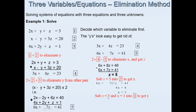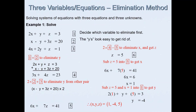Now substitute z = 5 and x = 1 into equation 1: 2(1) + y + 5 = 3. This gives 7 + y = 3, so y = −4. The final answer is x = 1, y = −4, and z = 5 respectively.